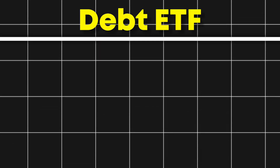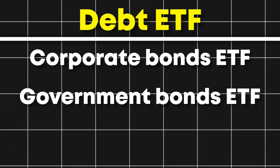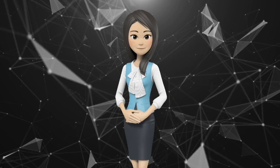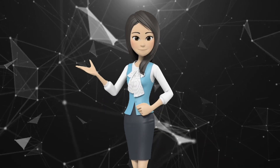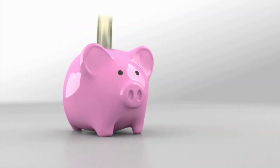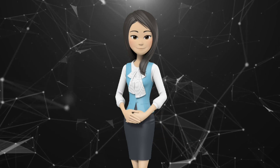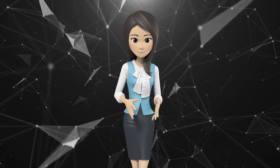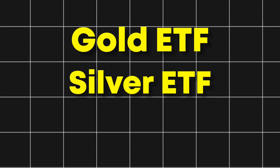The second type is debt ETF, which includes corporate bonds and government bond ETFs. The advantage here is better liquidity — if you invest directly in bonds, liquidity is often low, but investing through ETFs gives you more liquidity. Regarding commodity ETFs, the third type, there are gold ETFs, silver ETFs, and gas ETFs available.